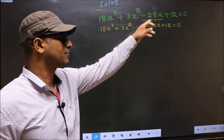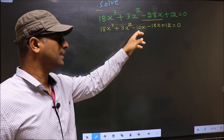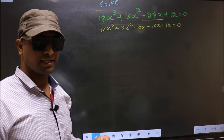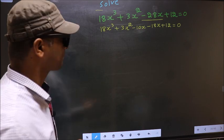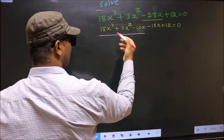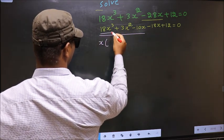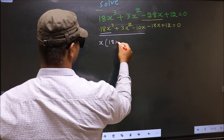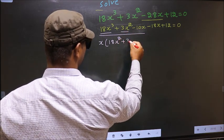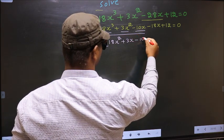In place of -28x, I have written -10x - 18x. Now from the first 3 terms, what can be taken out common is x. So you get x times (18x² + 3x - 10).